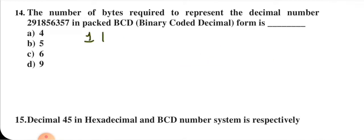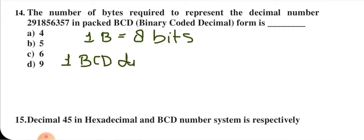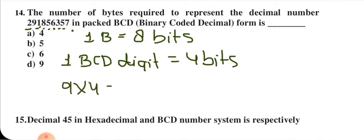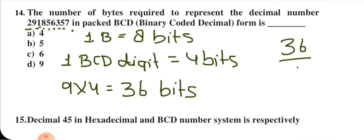The decimal number has 9 digits, so 9 × 4 = 36 bits are required. Converting to bytes: 36 ÷ 8 = 4.5. Since half a byte is not possible, we round up to 5 bytes. Option B is correct.